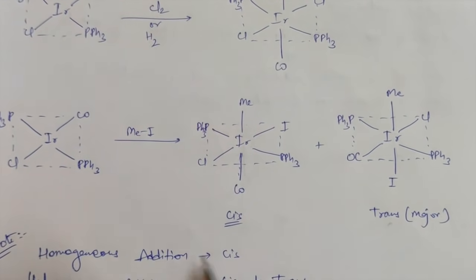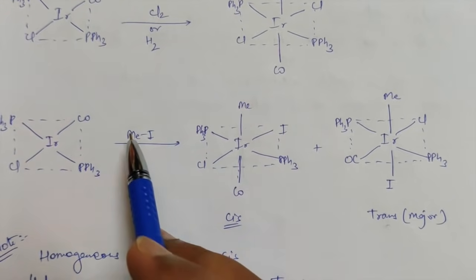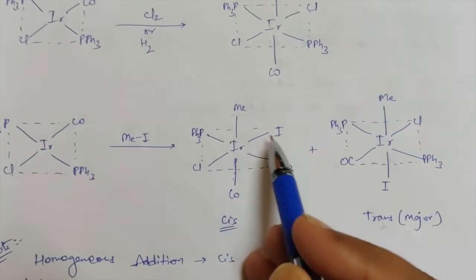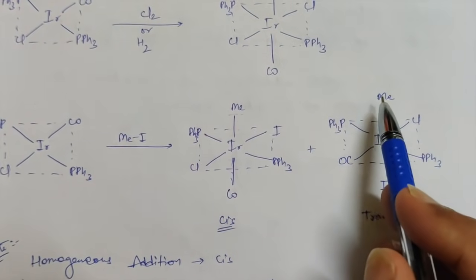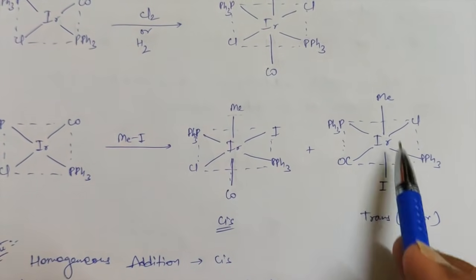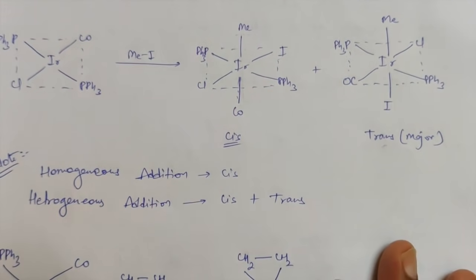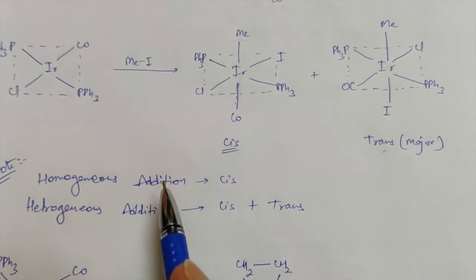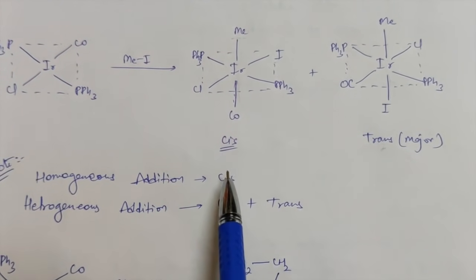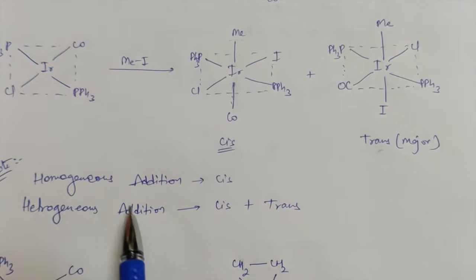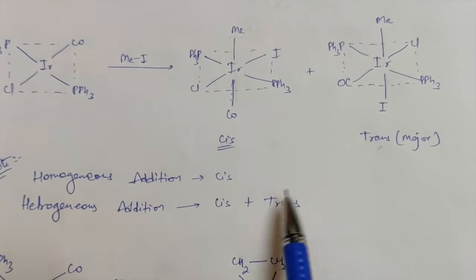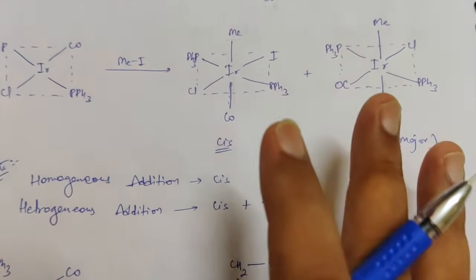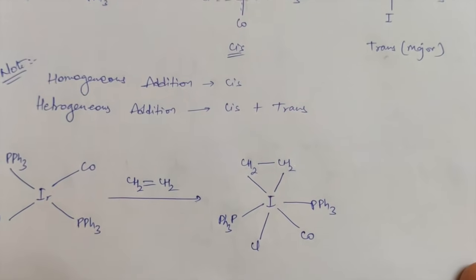You can also have a second kind of addition where the same complex reacts with methyl iodide. Methyl iodide can join in two ways — either in cis form where methyl and iodine are 90 degrees to each other, or trans to each other. Generally the trans product is the major one. For homogeneous addition such as Cl2 or H2 the product is always cis, whereas for heterogeneous addition like methyl iodide you get both cis and trans products with trans as the major one.